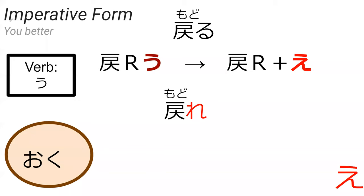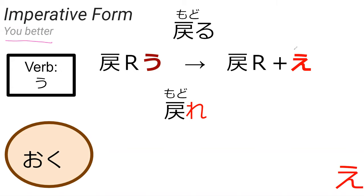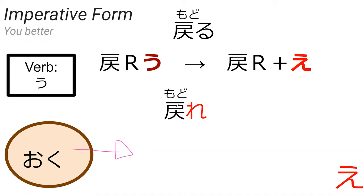Imperative form is a lot like te-form — the meaning is like saying 'you better do something' or cheering somebody on during sports. In this context it's more like 'you better do this.' For u-verbs, all you do is drop the u and add e — so modoru becomes modore. So how would you change oku into imperative form? Okay — perfect. Let's go read our sentence from the book.